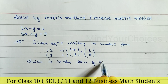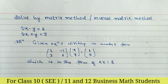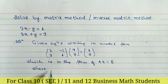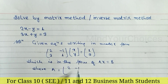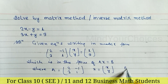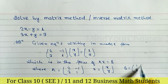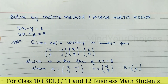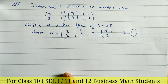This is in the form AX = B. Here A is equal to the matrix [2, -1; 3, 1], X is equal to the column vector [x; y], and B is equal to the column vector [1; 9]. So we have the values of A, X, and B. After this, we have to find the determinant of A.